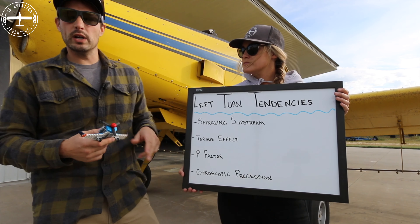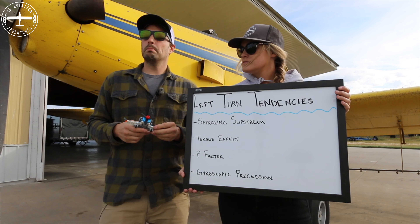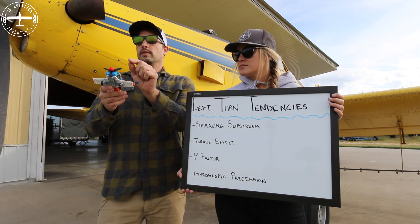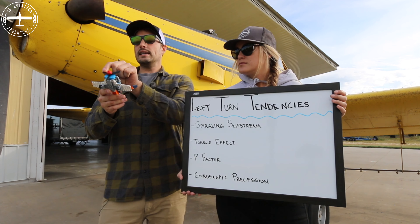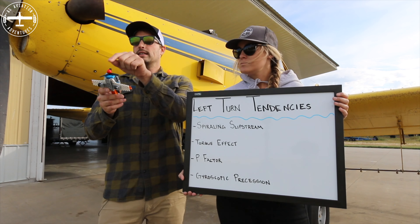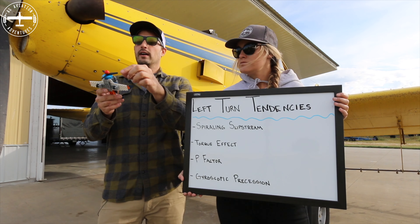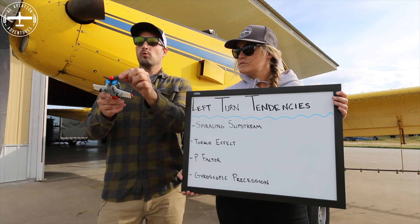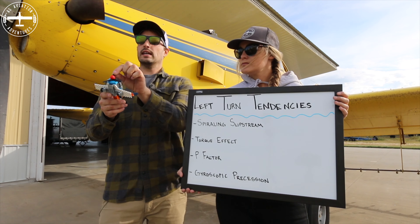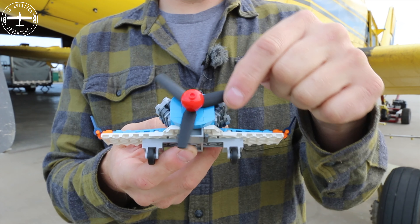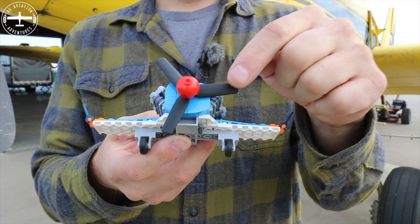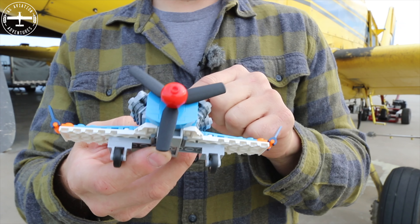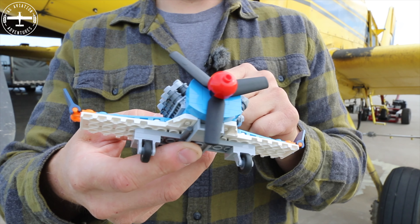The next one is P-factor. When I pitch the airplane up, the descending blade takes a larger bite of air than the ascending blades. The one going down is taking a larger bite of air than the one coming up. This again causes the airplane to want to yaw to the left.